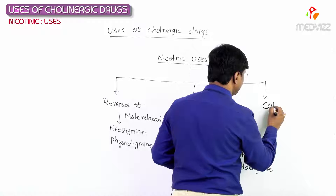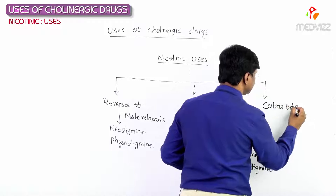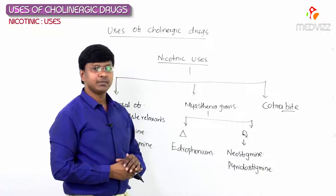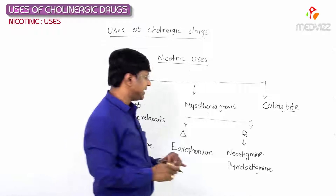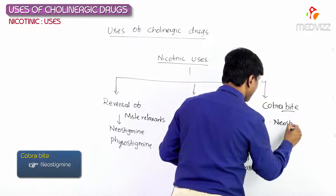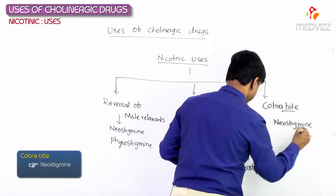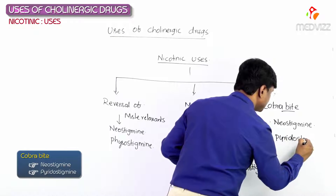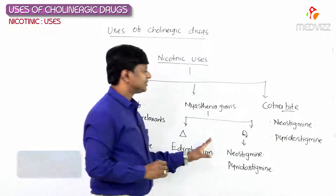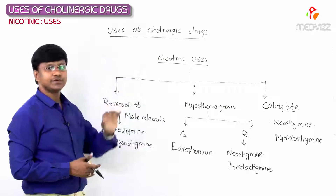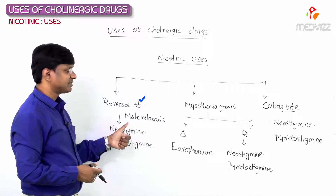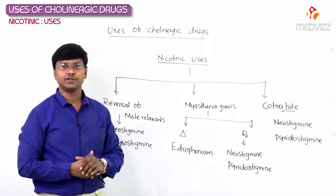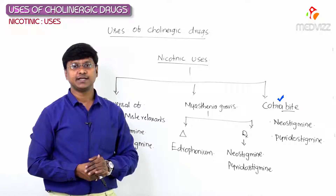The third nicotinic use is in the treatment of cobra bite, where the drugs used are neostigmine and pyridostigmine. In summary, the nicotinic uses of cholinergic drugs are: reversal of muscle relaxation, diagnosis and treatment of myasthenia gravis, and treatment of cobra bite — with neostigmine and pyridostigmine being the key drugs.